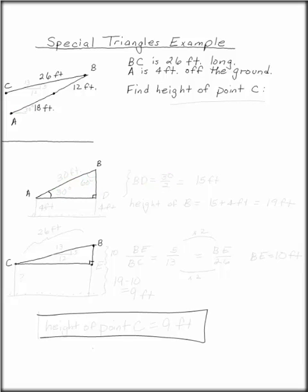In our special triangles example, we're given that the length of the guide wire for the crane is 26 feet long, and that A is 4 feet off the ground. We want to find the height of point C off the ground. We have to do this in two different steps.